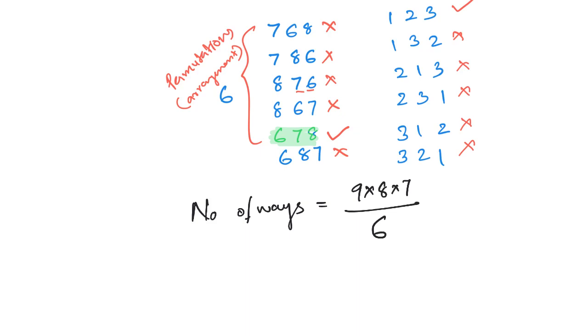So the answer is 84. In 84 ways, we can write the three-digit numbers in increasing order out of the 9 digits given.